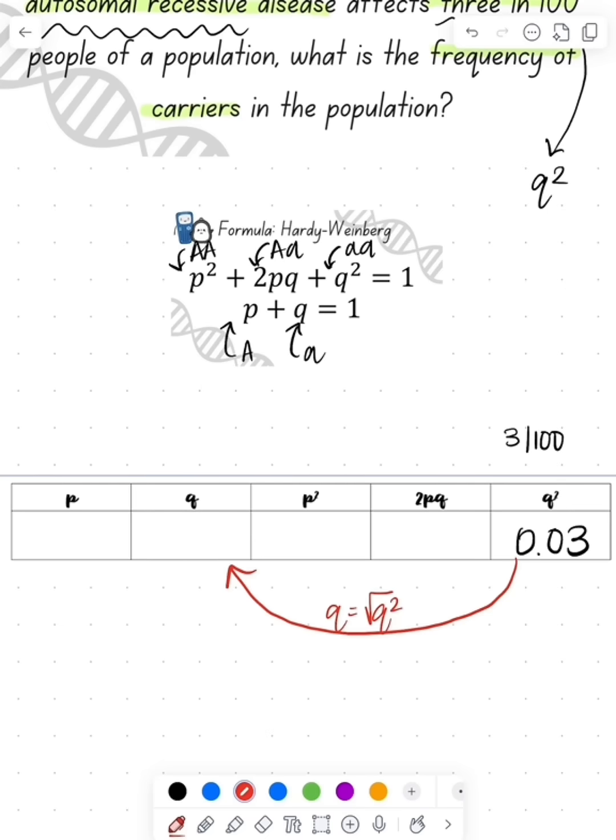To find our q value, all we do is take the square root of our q squared, which is going to give us 0.173.